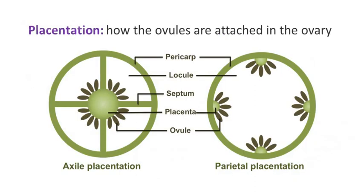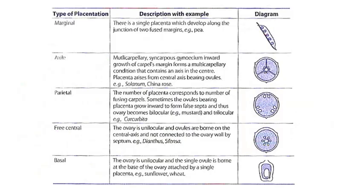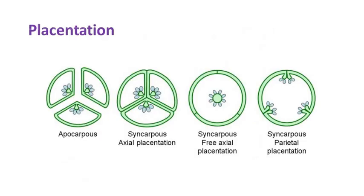Now let's get to know how the ovules are attached in the ovary — this is called placentation. There are different names given for identification of these types. To determine which they belong to, you need to look at the flower in two different sections. This table shows these placentations in detail. Using both carpel and ovule arrangement, we can define different forms of ovaries and flowers.